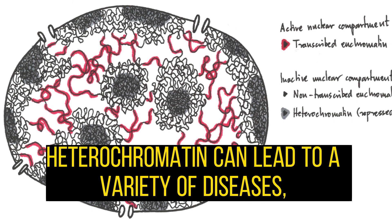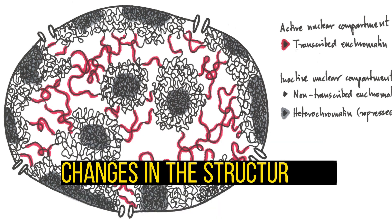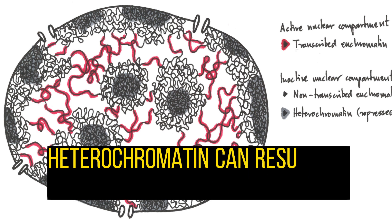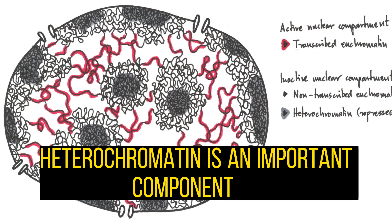Mutations or changes in the structure of heterochromatin can lead to a variety of diseases including cancer and developmental disorders. Changes in heterochromatin structure can result in the abnormal expression of genes, which can lead to diseases like cancer and developmental disorders such as Prader-Willi syndrome.